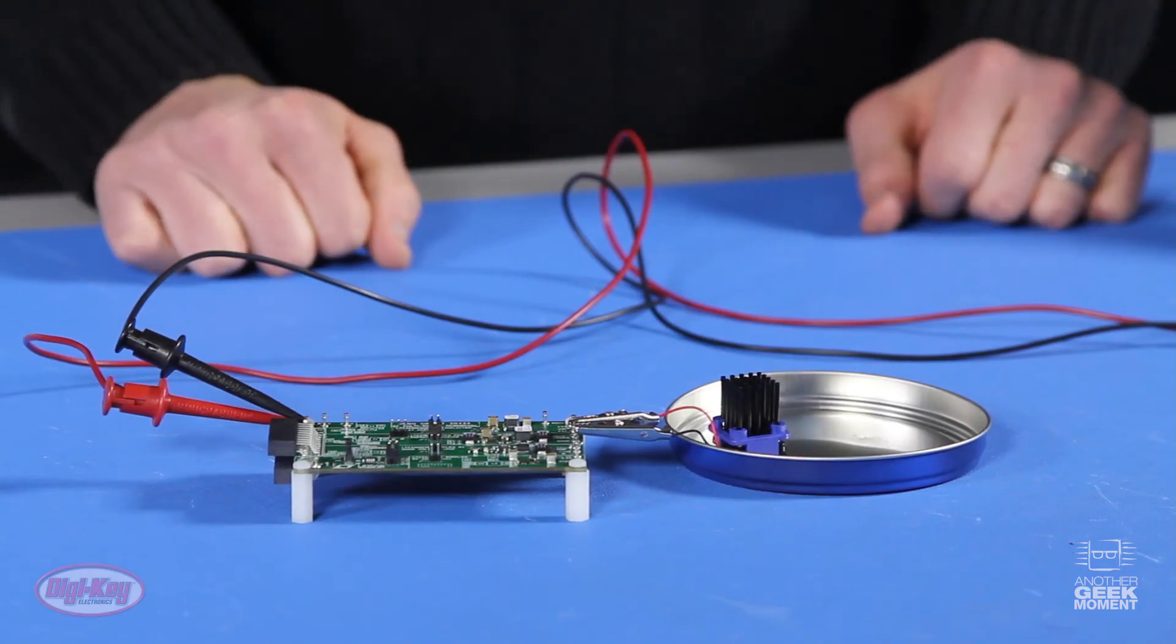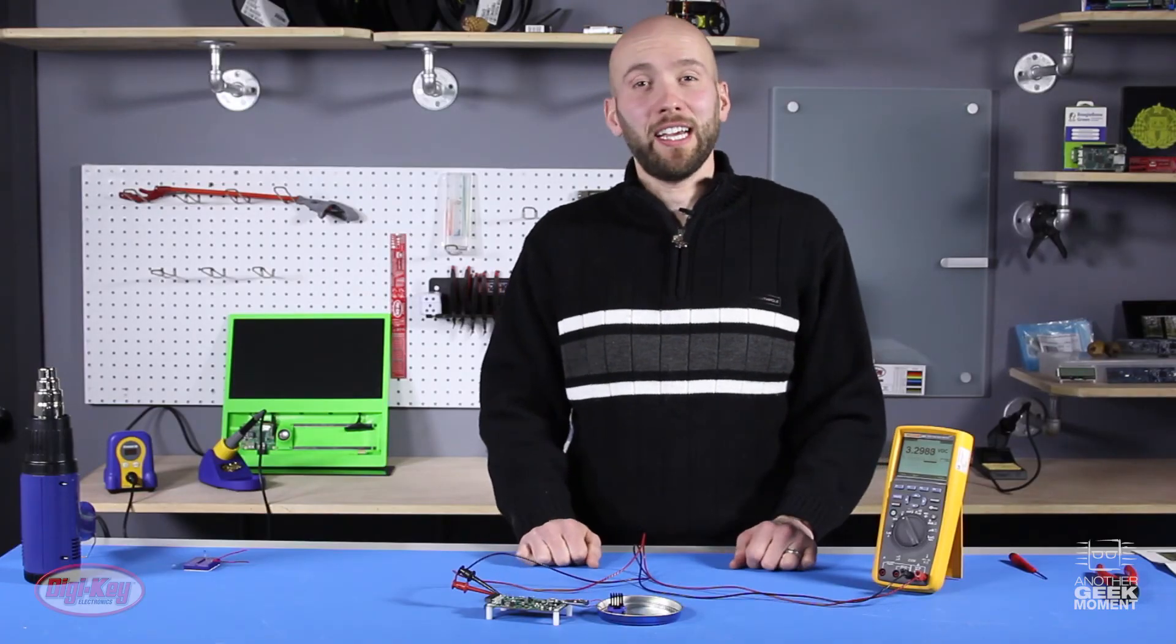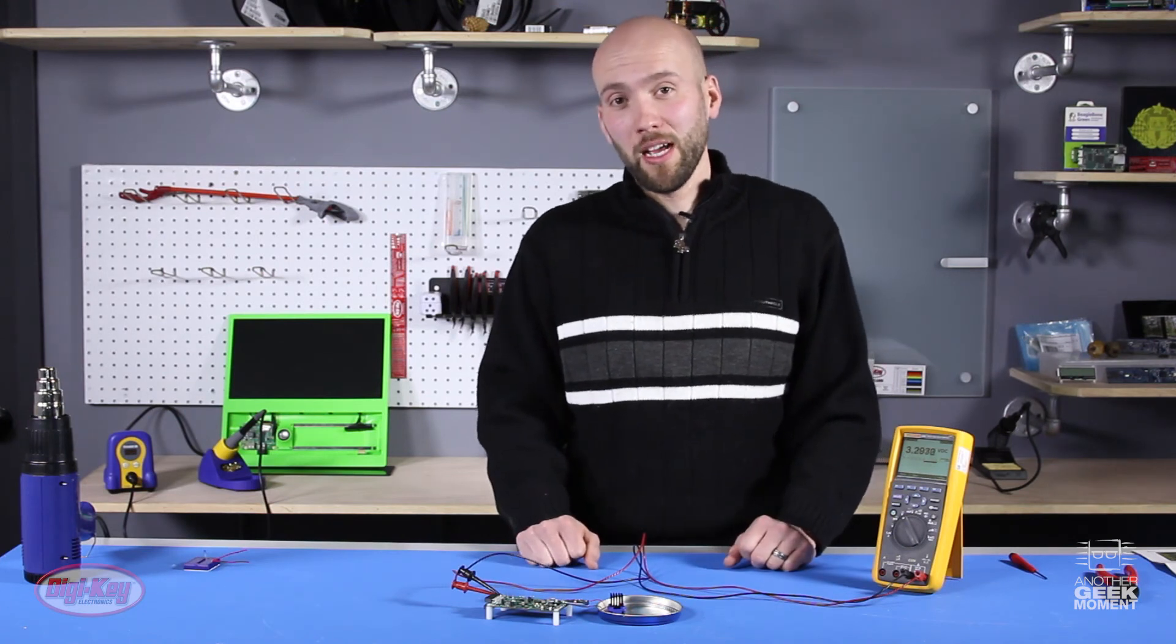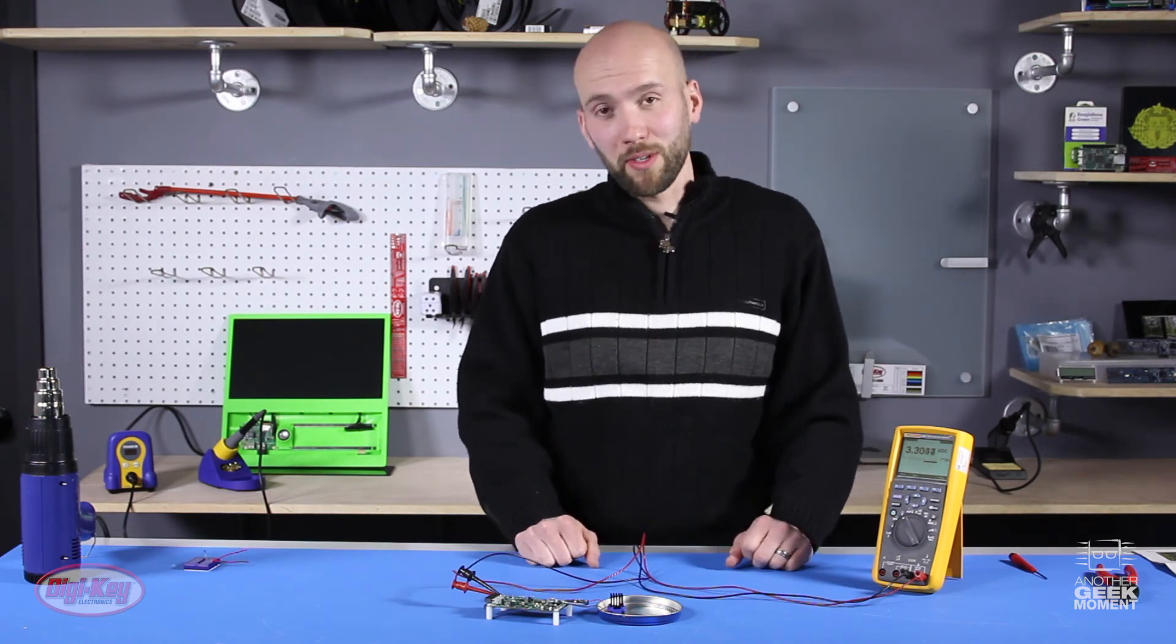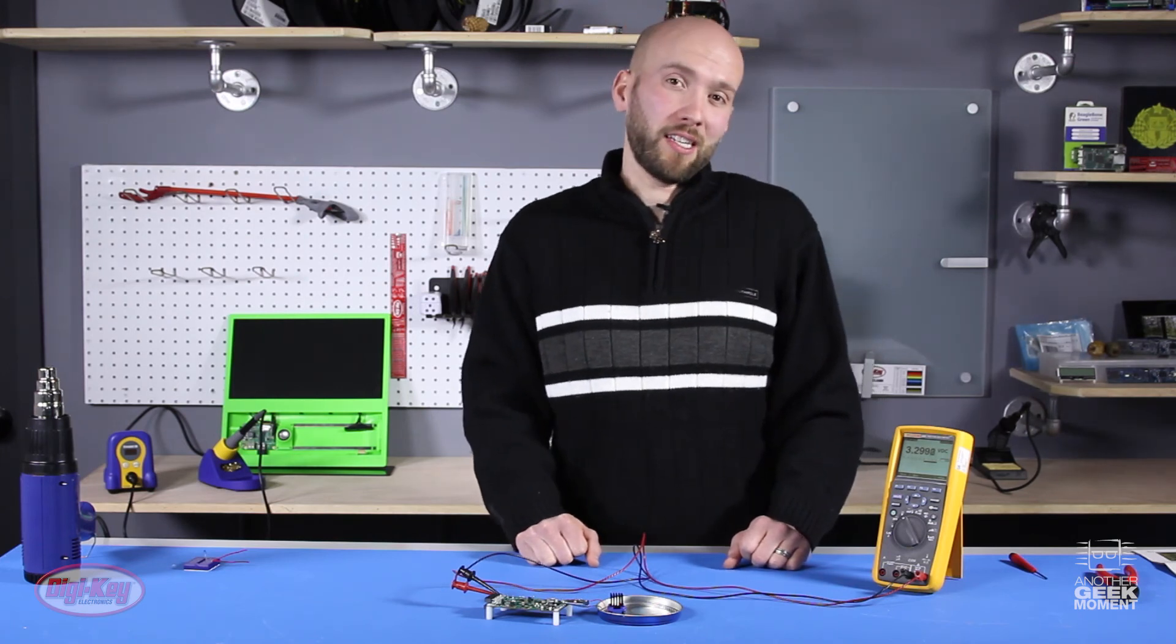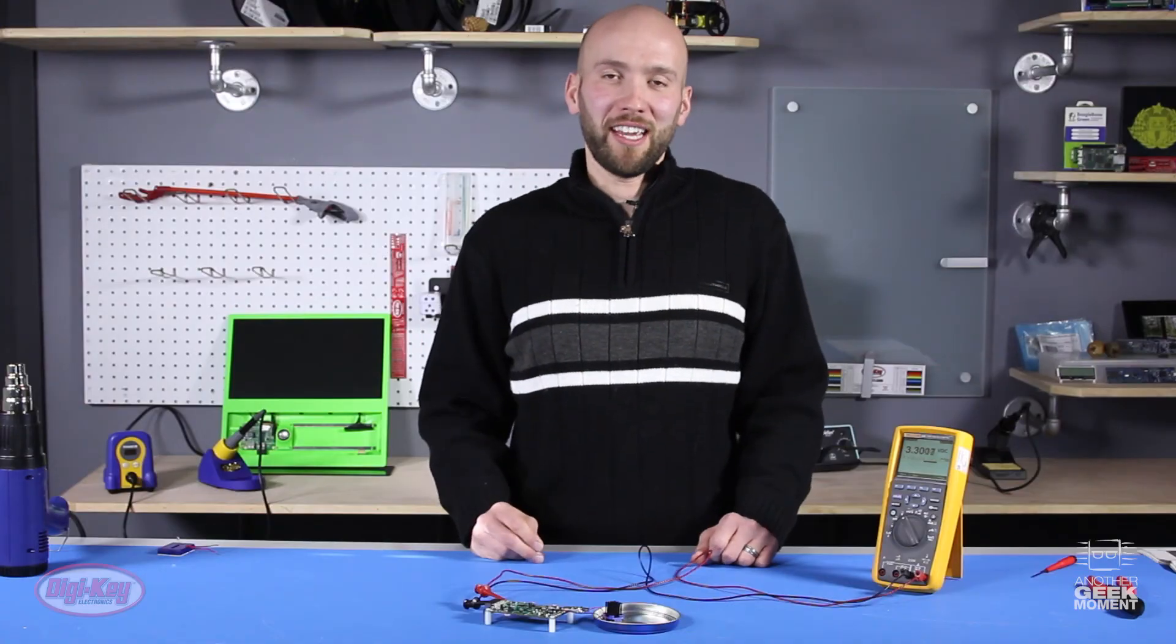Now that we have an idea how the Marlow TEG works with the linear tech evaluation board the question you might ask yourself is what am I going to do with 3.3 volts of renewable energy? You can hook it up to an Arduino Pro which opens up a world of opportunity. You could charge two double A cell batteries or you can light an LED.